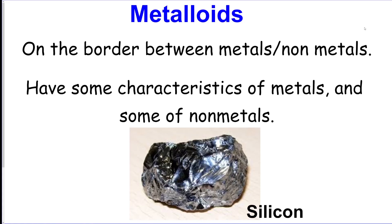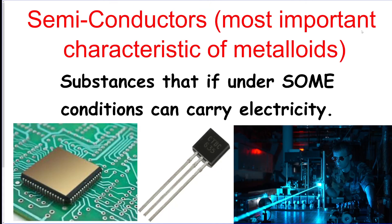Now our metalloids, which are those seven that we said are in between, they have some characteristics of metals and some of non-metals. This is really useful because we build a lot of electronics out of these. They're semiconductors, which means under some conditions they can carry electricity but under others they might not, so we can use them in different electronics to turn on and turn off in different ways.